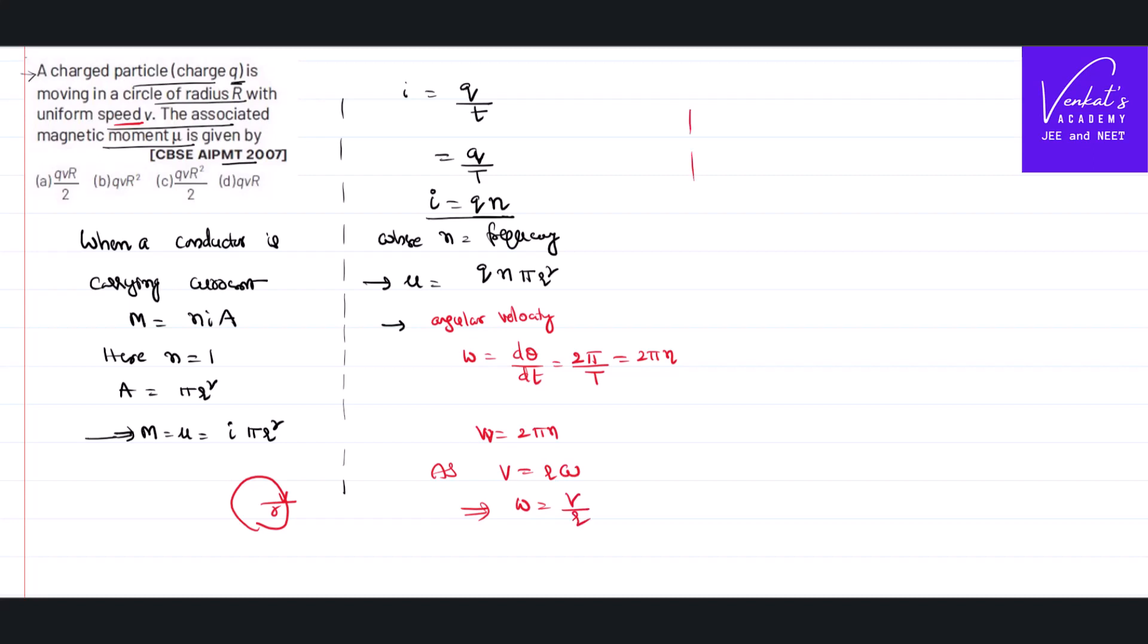So, let us substitute that omega value in this equation. That implies V by r is V by r equal to 2 pi n where n is frequency. As we have n in this, from here I can get n as V by 2 pi r.